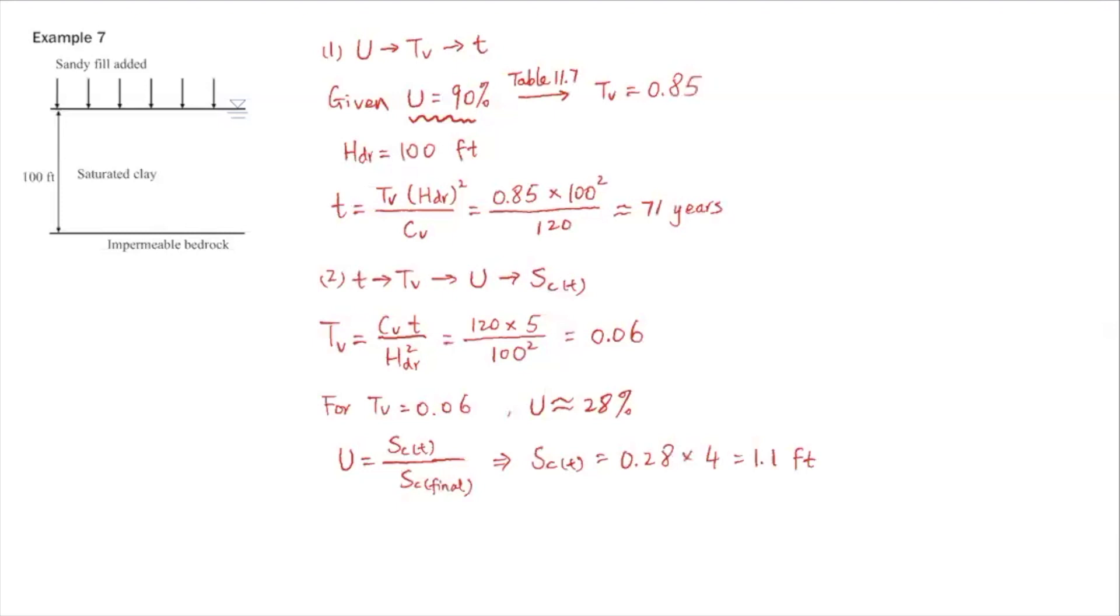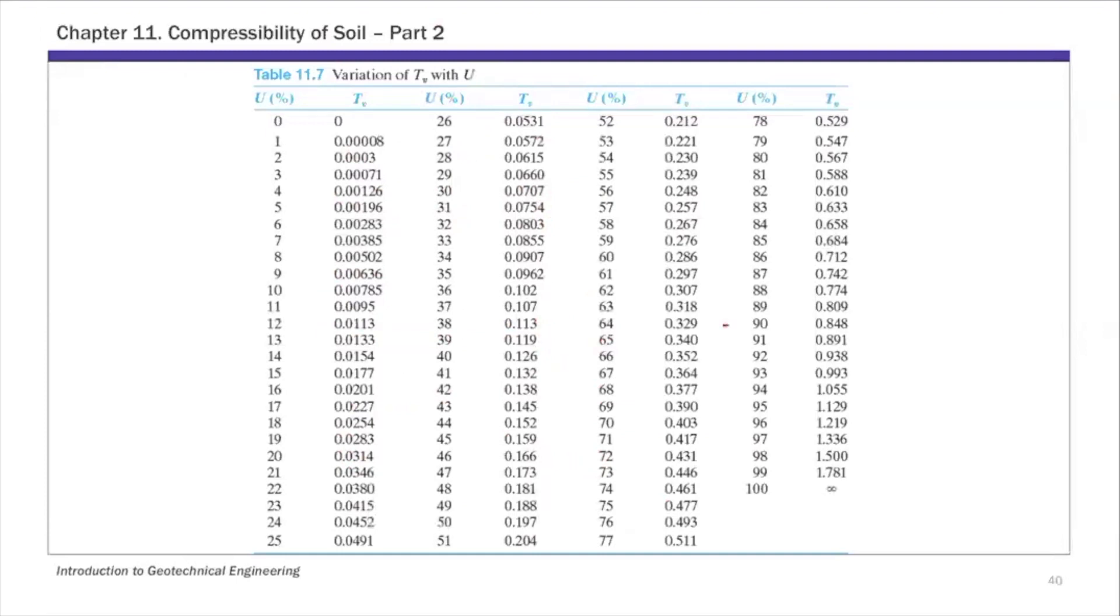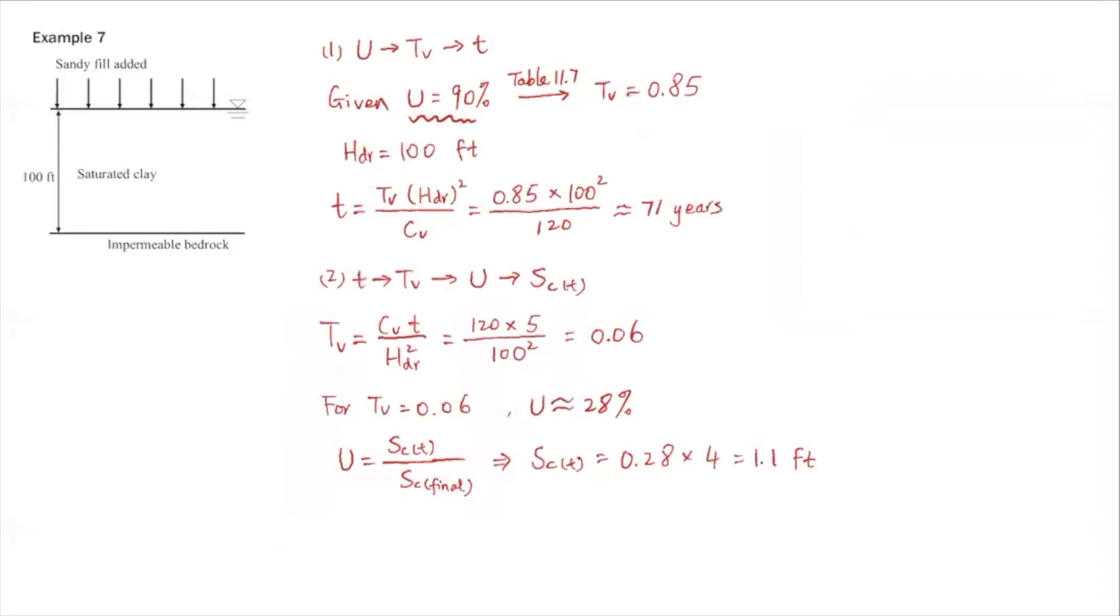Let me show you Table 11.7. We have U of 90 percent, then the corresponding time factor Tv is 0.848. That's how I get this value here. I'm using two digits, but it's 0.848.